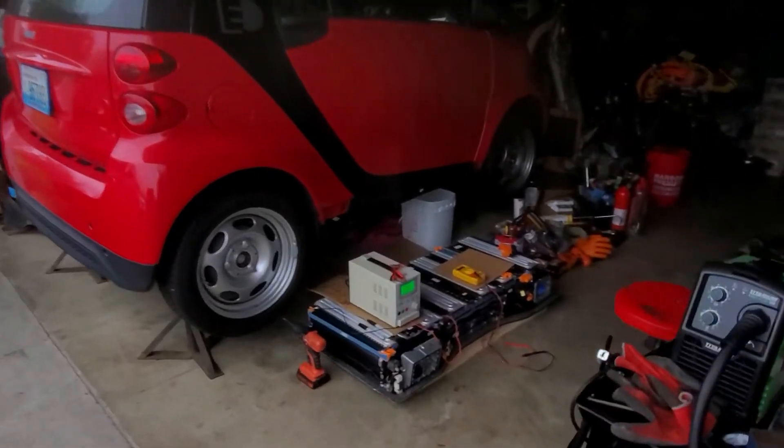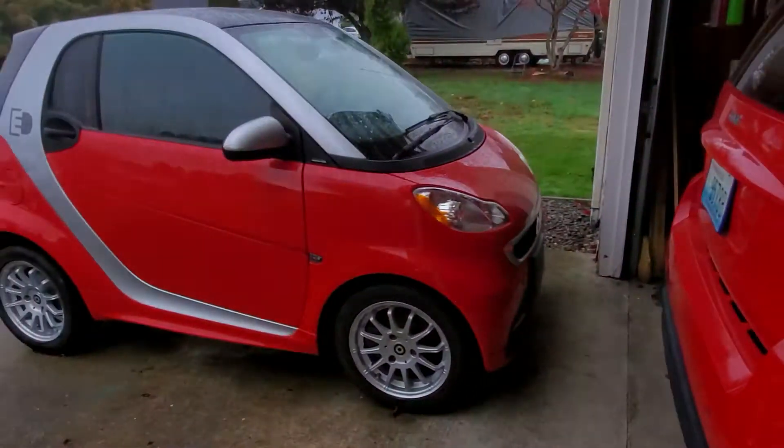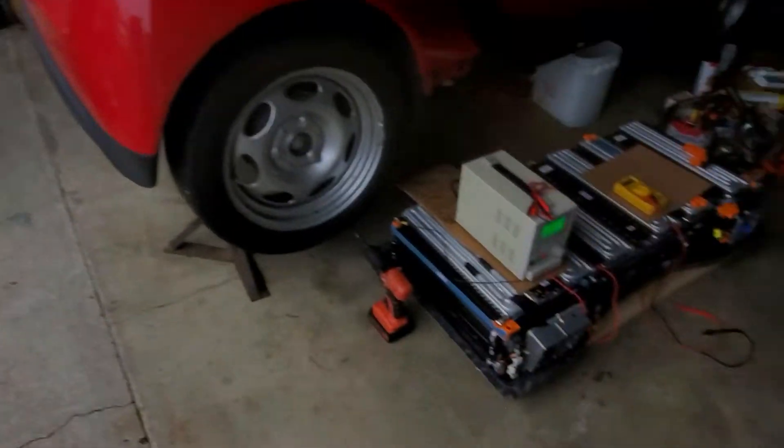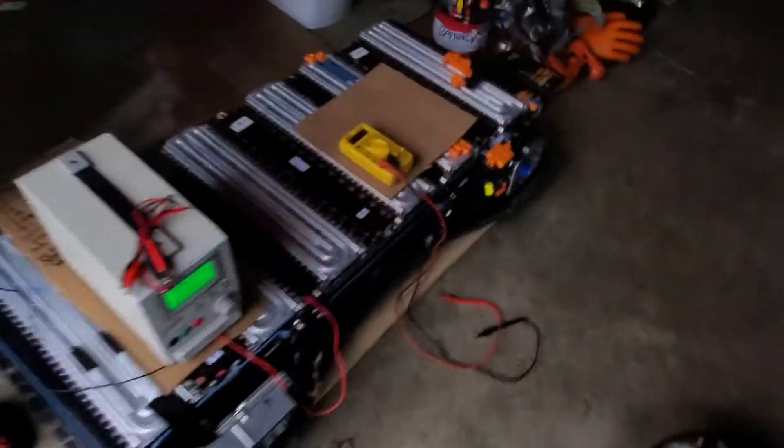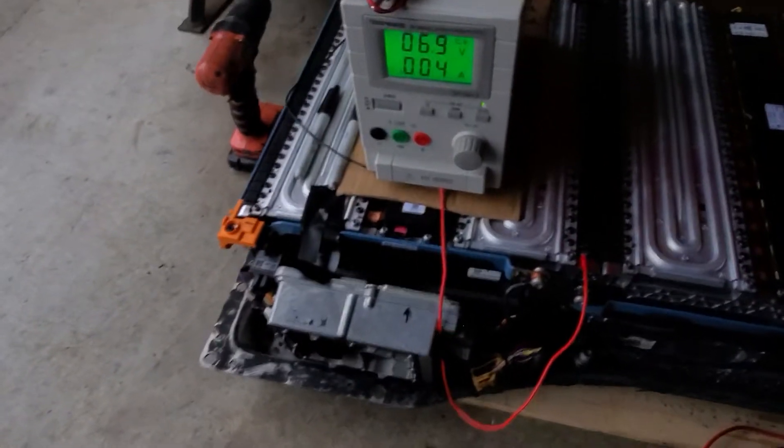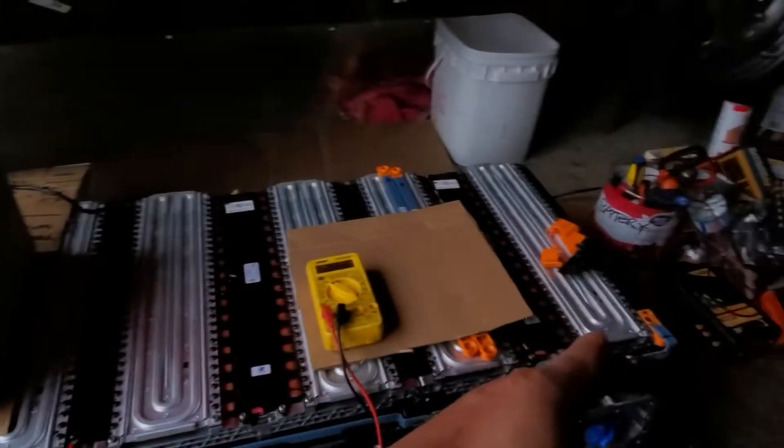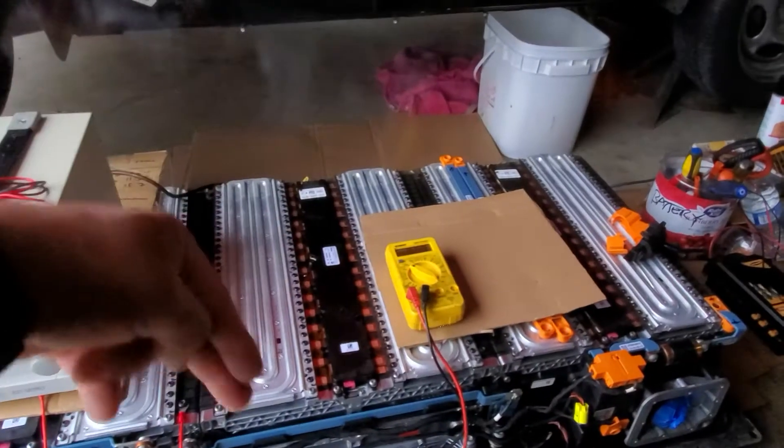Alright guys, I'll give you an update on my electric manual charging. So every module, I'll show you exactly what I'm doing. That's module one, two, and three. They have 33 cells each module.